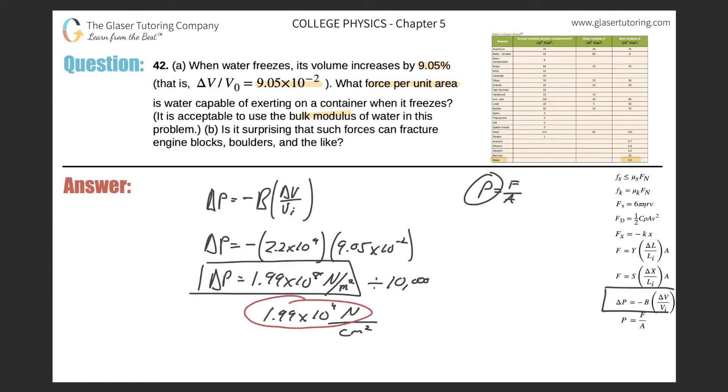Now, how much does this force actually relate to in kilograms or mass? Well, remember weight is equal to mg. So 1.99 times 10 to the fourth is equal to mass times 9.80. Divide out the 9.80 from both sides. And let's see what it works out to be. So divide that by 10,000, and then simply take it divided by 9.8. So 2,030 kilograms. That's an insane amount. That's almost two tons per square centimeter. I don't find it surprising that that'll fracture engine blocks and boulders and stuff like that.